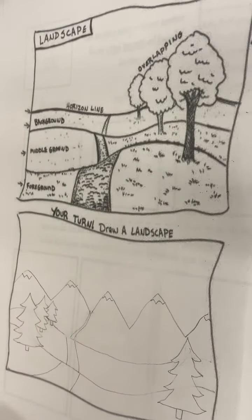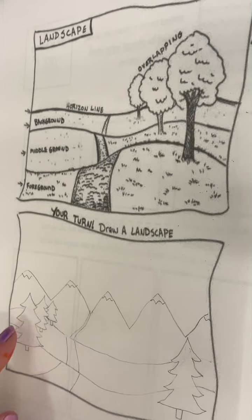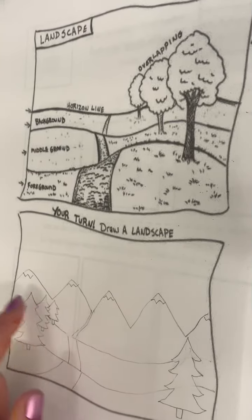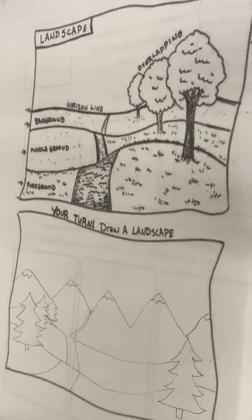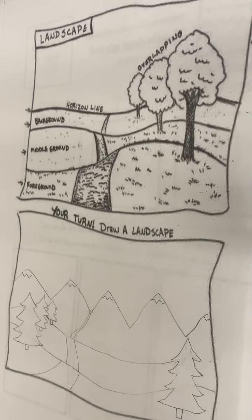For my example, I made pine trees with a trail and some mountains. You could make yours like mine, or it could be different — it could be a water scene, or you could have palm trees.